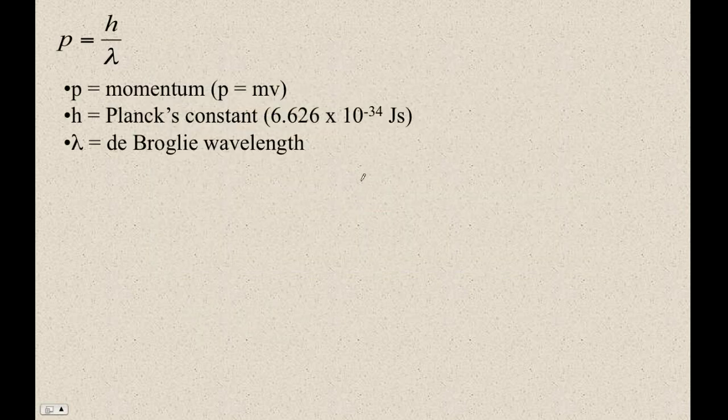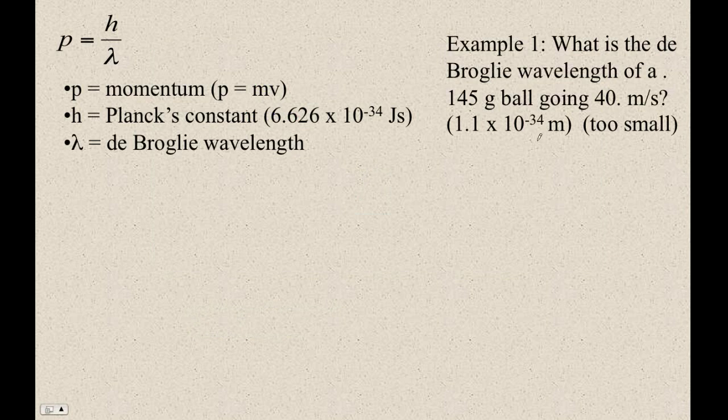Okay, so here's our little formula. Here's an example problem. Let's figure out the de Broglie wavelength of a baseball. This is a fast-pitch baseball. That's the mass of a baseball. That's about 90 miles per hour. So we start with the IB formula.